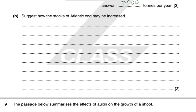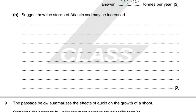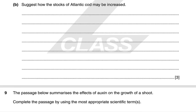To increase Atlantic cod stocks, you could suggest: reduction of fishing; controlling fishing through quotas or education; controlling pollution; or captive breeding and release — for example, restocking from fish farms. There is a variety of valid answers along these lines.